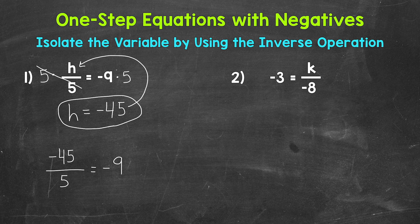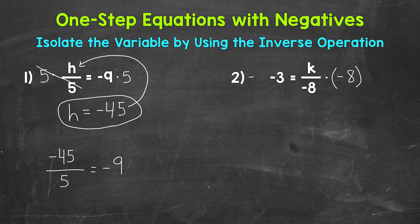Let's move on to number 2, where we have negative 3 equals k divided by negative 8. We need to isolate that variable of k. Since k is being divided by negative 8, we need to undo that division by using the inverse operation — the inverse of division is multiplication. So let's multiply the right side by negative 8, and whatever we do to one side, we must do to the other, so let's multiply the left side by negative 8 as well.